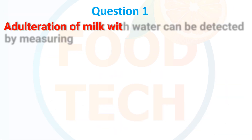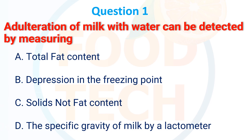Adulteration of milk with water can be detected by measuring: A. Total fat content, B. Depression in the freezing point, C. Solid not fat content, D. Specific gravity of milk by lactometer. The correct answer is D: specific gravity of milk by lactometer.